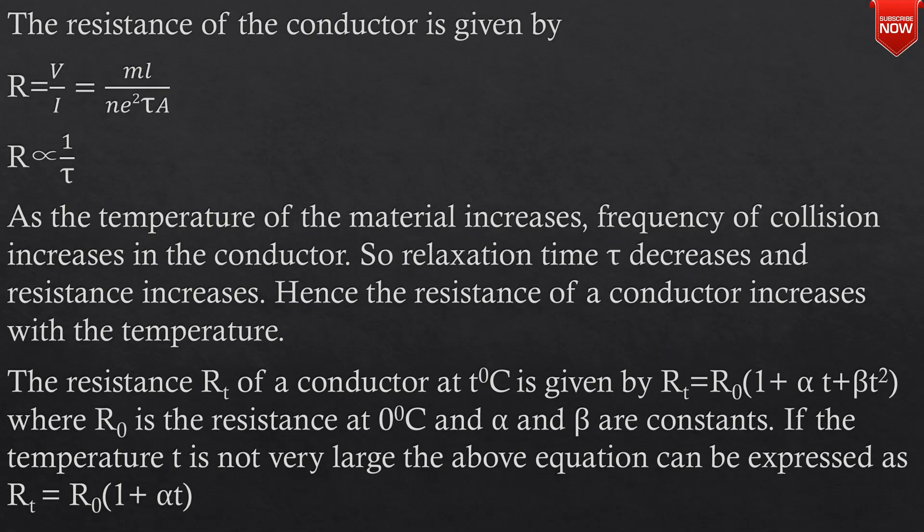The resistance of a conductor is given by R equals V divided by I, which equals ML divided by N E squared tau A. Therefore, R is proportional to 1 divided by tau.